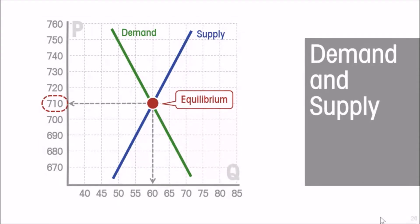Borrowing a concept from physics, equilibrium is a state of rest — there is no tendency for the price to change and the market is in a stable situation. It is also referred to as the market clearing price, because at that price, since quantity demanded equals quantity supplied, the market clears: there are no unsatisfied buyers and there are no sellers left with unsold produce.